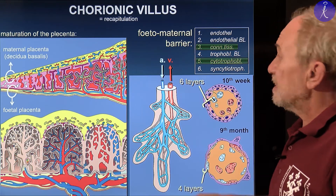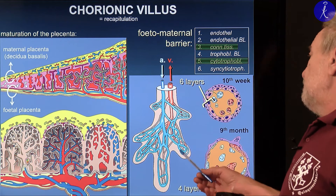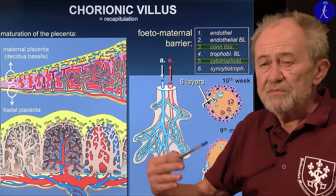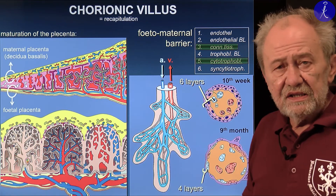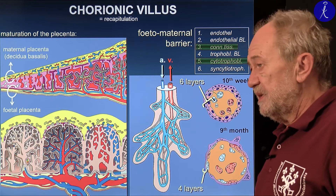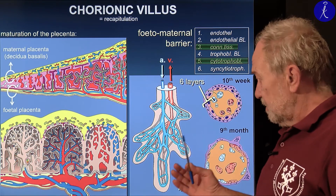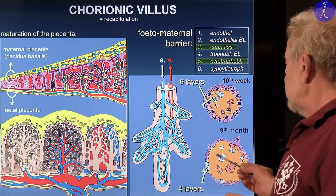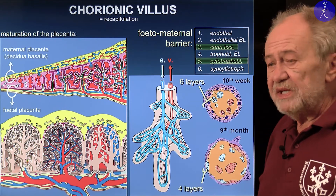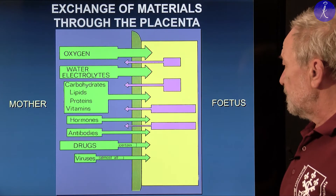So all together, six layers. But as the demand of the fetus increases, these layers are reduced to increase the exchange of materials. By the time of term — at the ninth month — only four layers remain, because capillaries gradually move towards the syncytium, and the inner cytotrophoblast layer disappears, at least for the light microscope. Electron-microscopic examination could still recognize a thin rim of cytoplasm. By migrating towards the surface, the capillaries push away the mesenchyme, so there is no need to pass through the mesenchyme. These are the two layers lost closer to term.